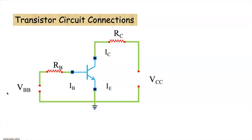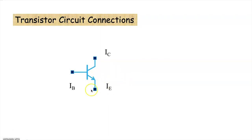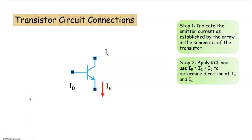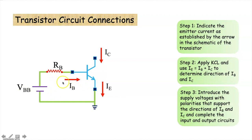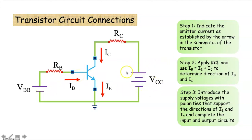When we use any one of the CB, CC, or CE configurations, it is very important to connect the terminals with external voltage with proper polarity. To determine this, we follow these steps: we follow the direction of the arrow, and mark the direction of the current flowing as emitter current. Next, we apply KCL to determine the direction of collector current and base current, knowing that emitter current equals the sum of collector current and base current. We then connect an external voltage in the base-emitter circuit such that IB flows in the required direction — IB will flow when this terminal is positive and this terminal is negative. Similarly, we connect an external voltage at the collector-emitter circuit such that IC flows in the required direction, which is possible only when this terminal is positive and this terminal is negative. This is how we determine the polarity of the external voltages.